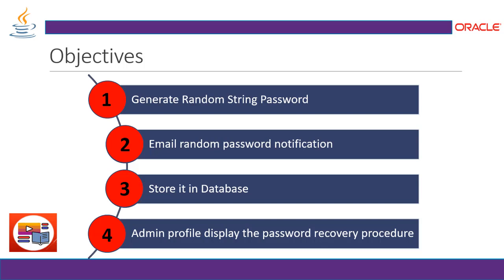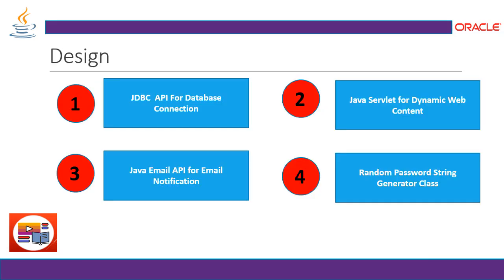While implementing these goals and objectives, first we take a look at the design. We need to create the random password and store it in a database. For that we need: 1) JDBC API for database connection, 2) communication between dynamic web content and the database from the frontend, with business logic implemented via Java Servlet, and 3) Java Mail API for email notification.